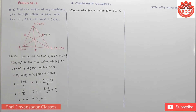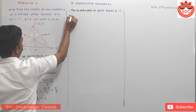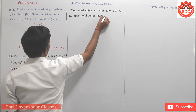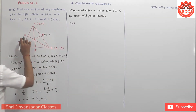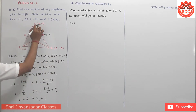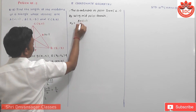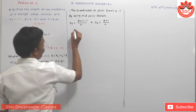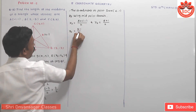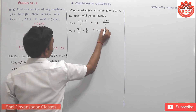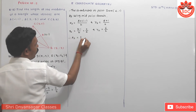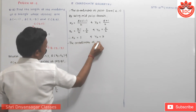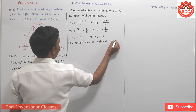Similarly, we can find out point E. Again by using the midpoint formula, for E (midpoint of AC): x2 = (3 + (-1))/2 and y2 = (5 + 1)/2. So x2 = 2/2 = 1 and y2 = 6/2 = 3. Therefore, the coordinates of point E are (1, 3).